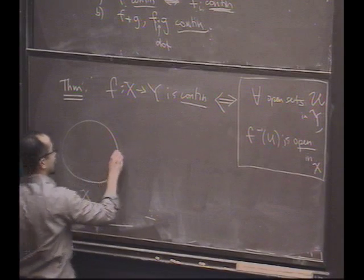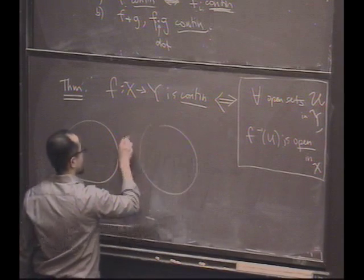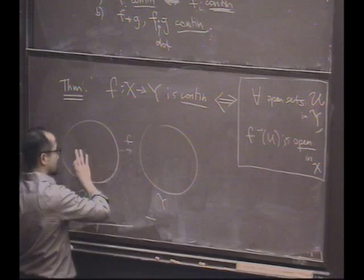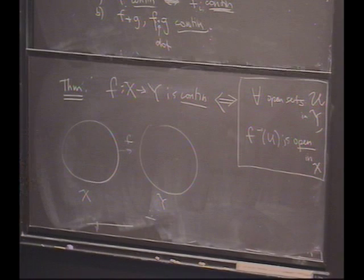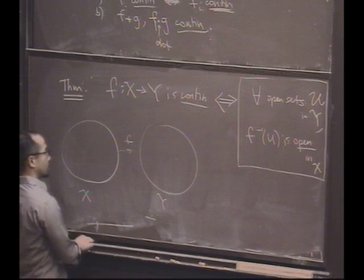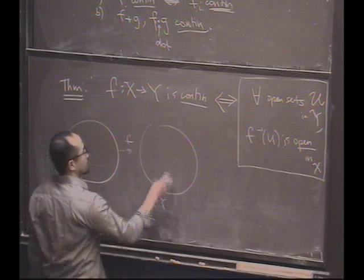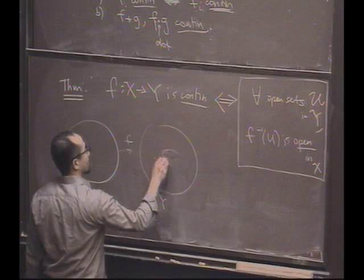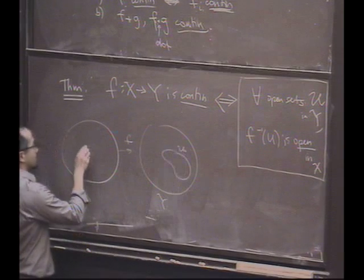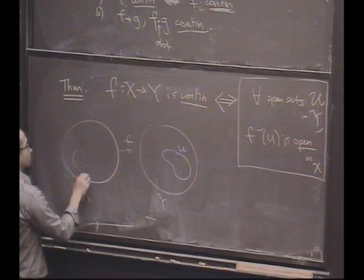Here's a set X. Here's a function. Here's a set Y. If I map this set into this one, I claim this function is going to be continuous if for any open set U I pick here, well, it has an inverse image which might be over here.